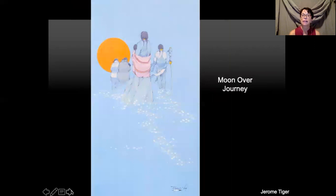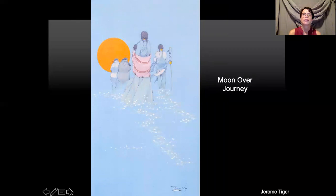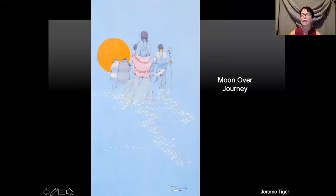This is the last painting by Jerome Tiger we'll see today — "Moon Over Journey." It makes a nice ending with people walking off into the moonlit evening. It's painted in a cool color palette, except for the moon and the flesh tones. It looks snowy — he's painted a snow trail — and it gives you a quiet, almost sad ending, wondering what's going to happen to these people.